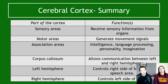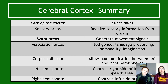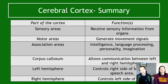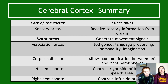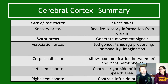To summarize the entire cerebral cortex: sensory areas receive sensory information from organs; motor areas generate movement signals; association areas handle intelligence, language processing, personality, and imagination. The corpus callosum connects the left and right hemispheres and allows communication. The left hemisphere controls the right side of the body and contains the speech area; the right hemisphere controls the left side of the body and has no speech area — it's known as the silent brain.